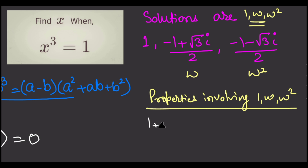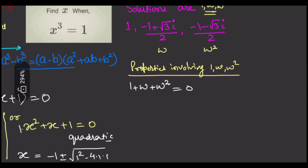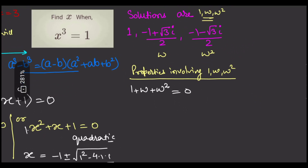The first one is: 1 plus omega plus omega square is equal to 0. You can easily see this because omega is the root of this equation. So if we put omega here, it should satisfy the equation. Then 1 plus omega plus omega square is equal to 0. So this is obvious.